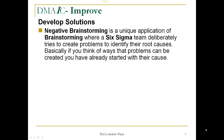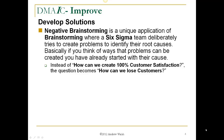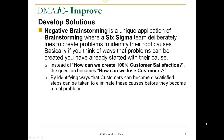Negative brainstorming is a unique application of brainstorming where a Six Sigma team will deliberately try to create problems to identify their root causes. Basically, if you think of ways that problems can be created, you have already started with their cause. Instead of asking how can we create 100% customer satisfaction, the question becomes: how can we lose 100% of our customers? By identifying ways that customers can become dissatisfied and leave, steps can be taken to eliminate these causes before they become a real problem.